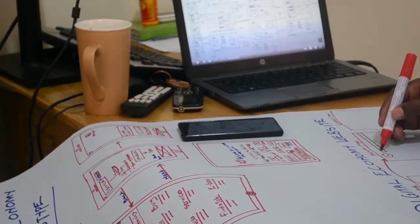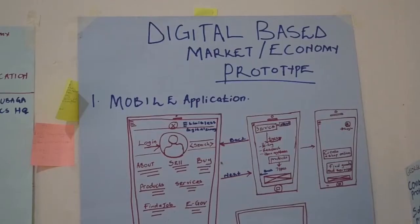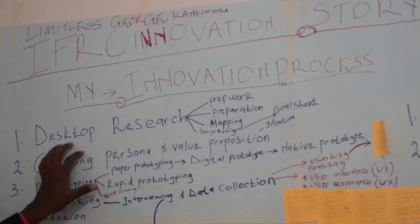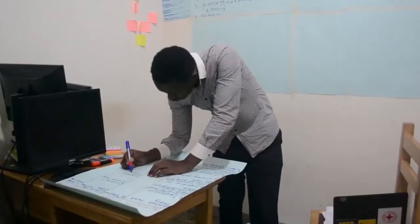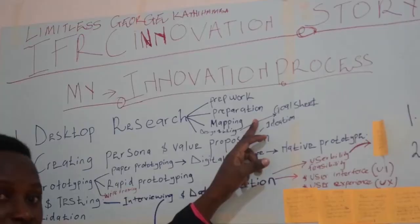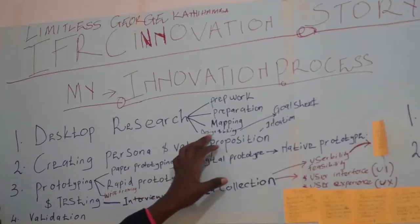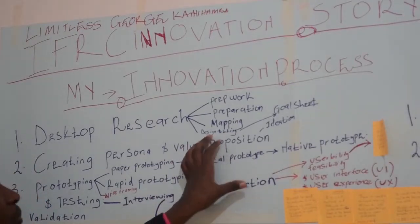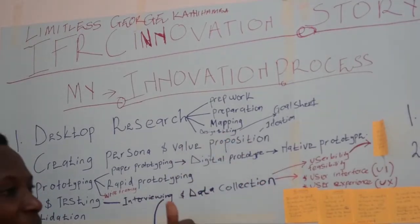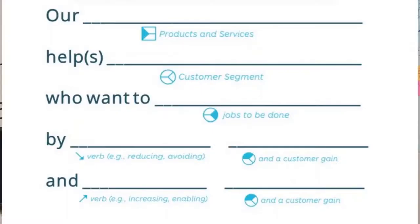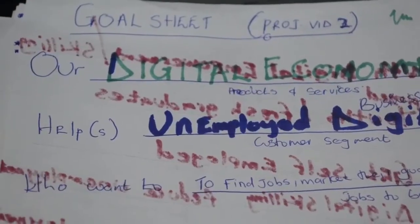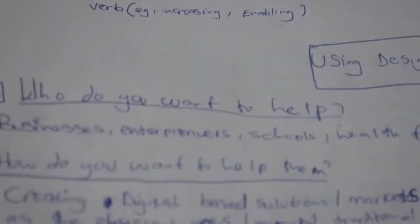I had to do paper prototyping and wire framing. Under the desktop research, I did trip work and preparation, and used mapping tools to map out my plans. I had to do design thinking, going through the ideation phase and using the goal sheet. I filled my goal sheet and used it to find out my customer segment.